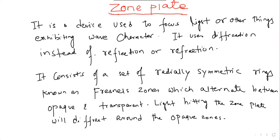So, what I discussed till now? What is zone plate? It is a device used to focus light or other things exhibiting wave-like character. And it uses diffraction instead of refraction or reflection.